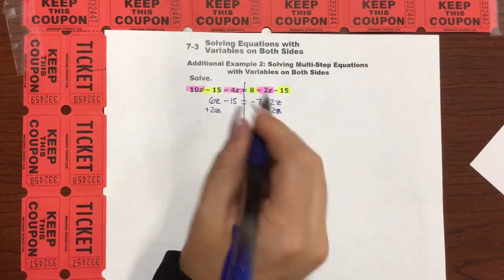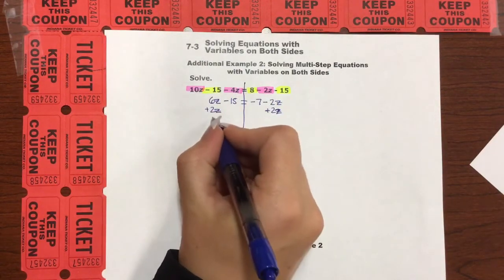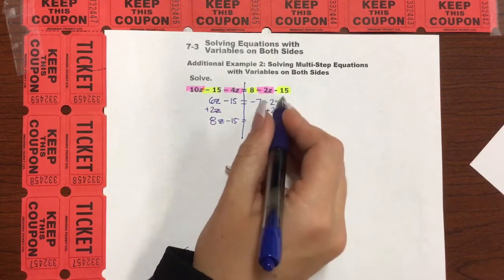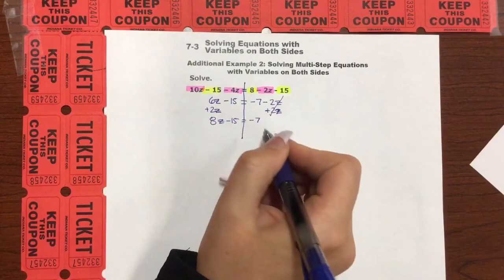And we are left with 8z over here. Minus 15 equals, that cancels, negative 7. Perfect. All right.